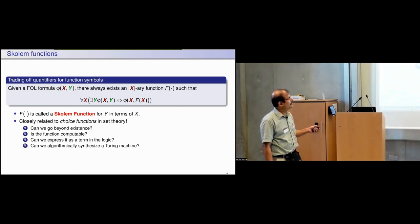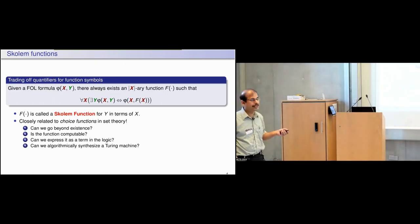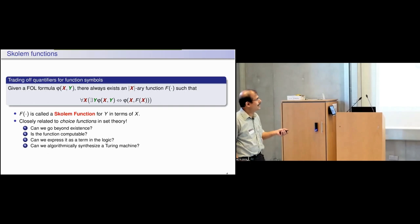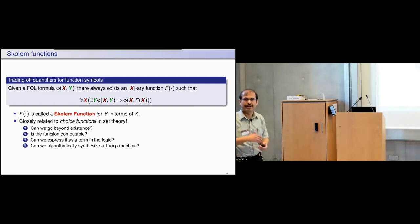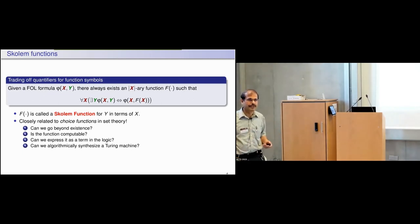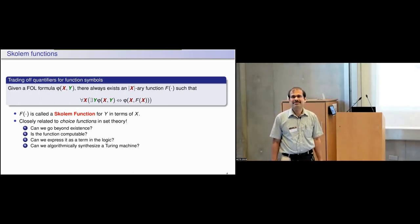Can we express it as a term in the logic? We will soon see that the function may exist but may not be expressible as a term. The most general question: we know this function exists, and we know it may not always be computable, but even when it is computable it may not be expressible as a term. What is the best we can ask for? Is there a Turing machine which computes this function, and can we algorithmically synthesize such a Turing machine?